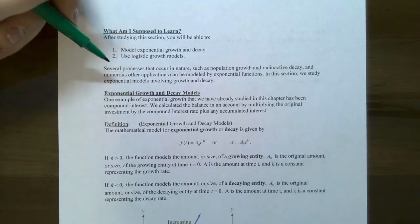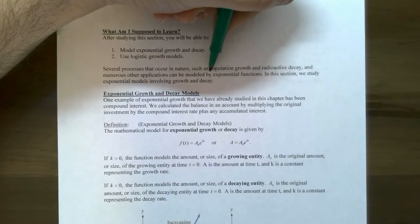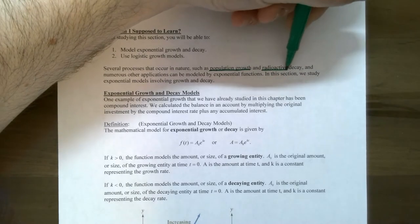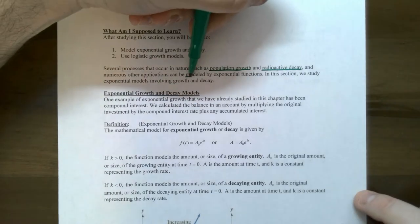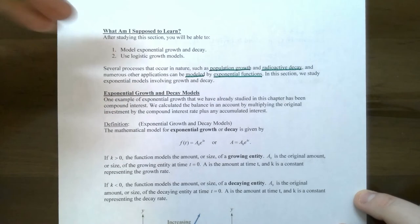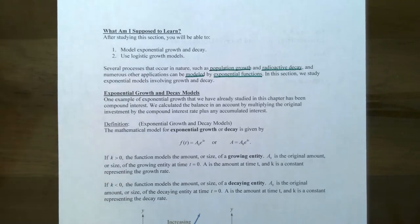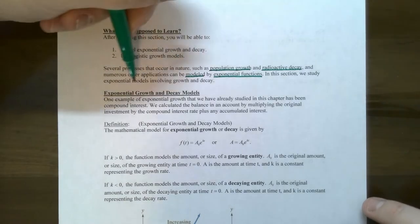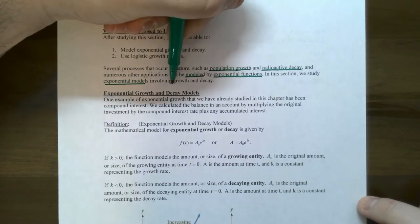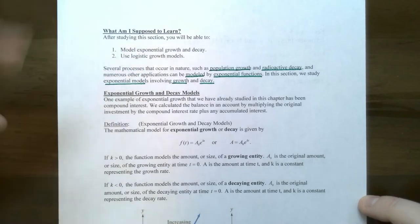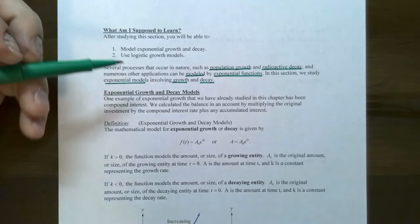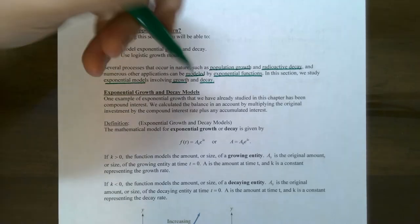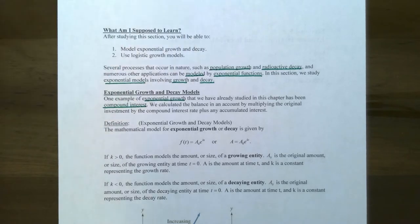There are several processes that occur in nature, such as population growth and radioactive decay, and numerous other applications can be modeled by exponential functions. So this entire section is about modeling exponential functions by growth and decay. We've already seen an example of exponential growth — it came up in terms of compound interest or continuous compound interest.